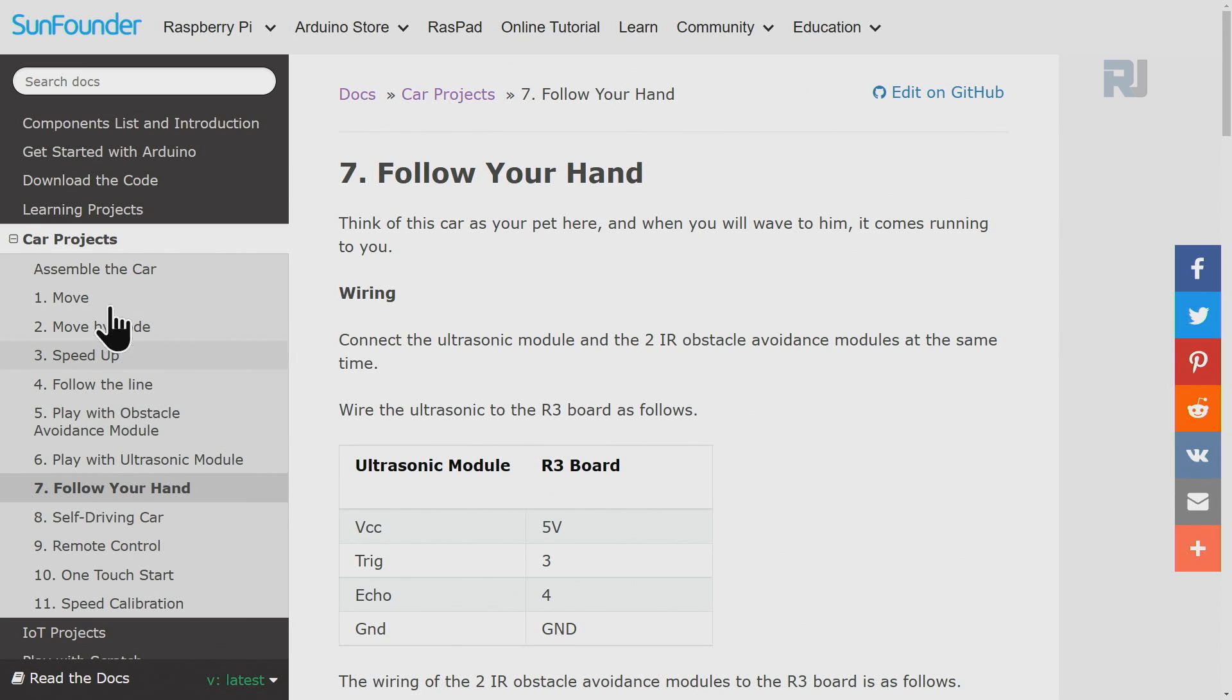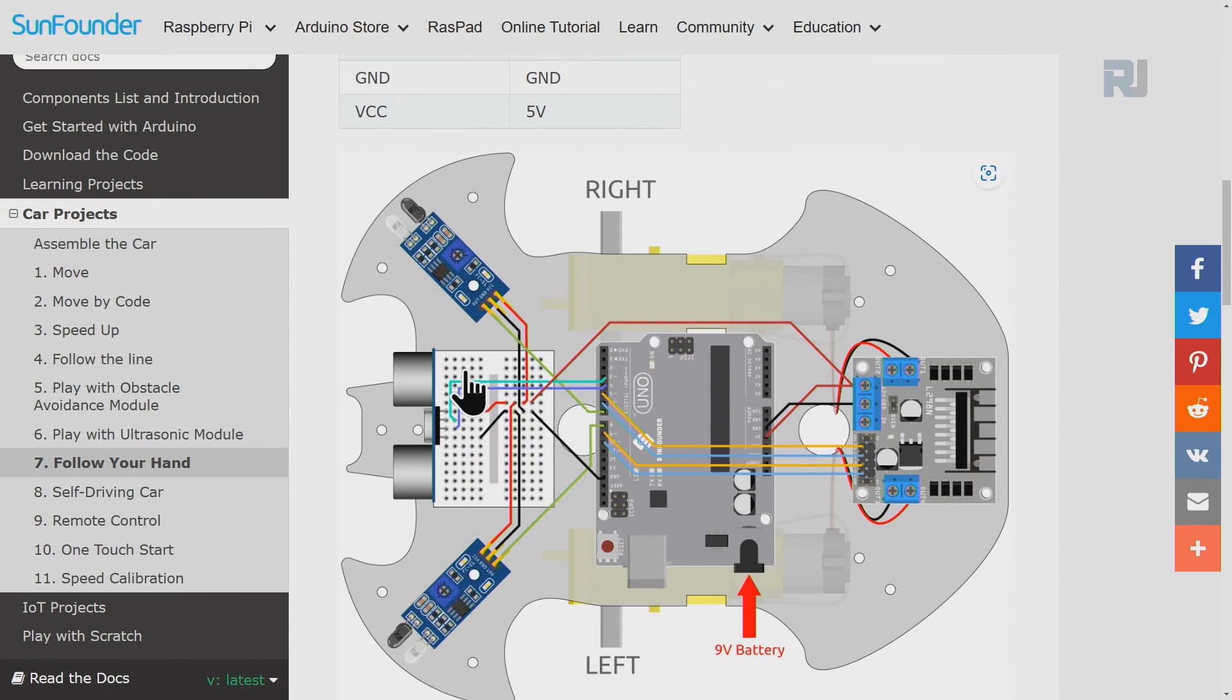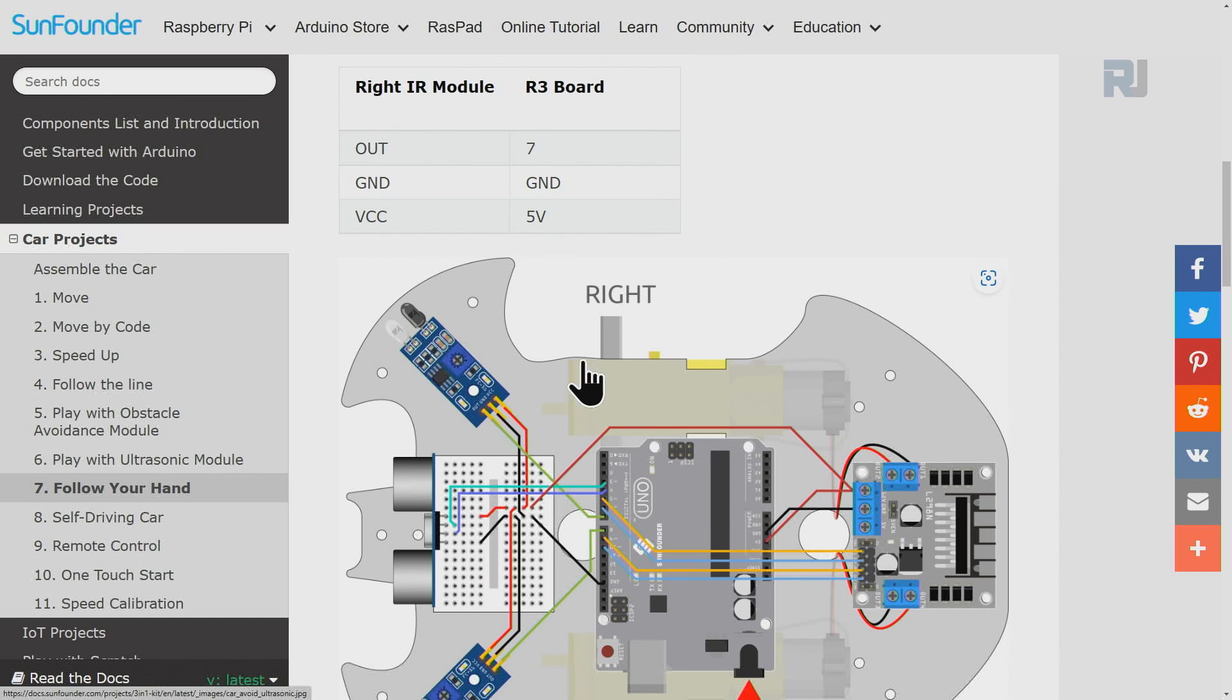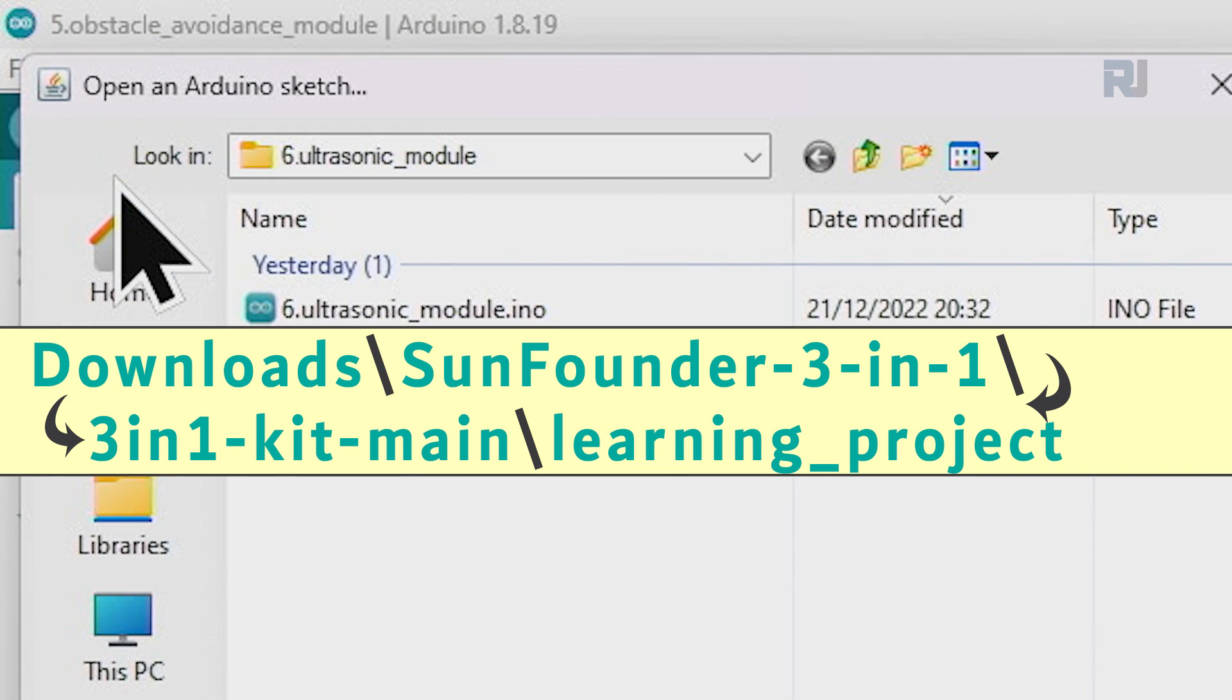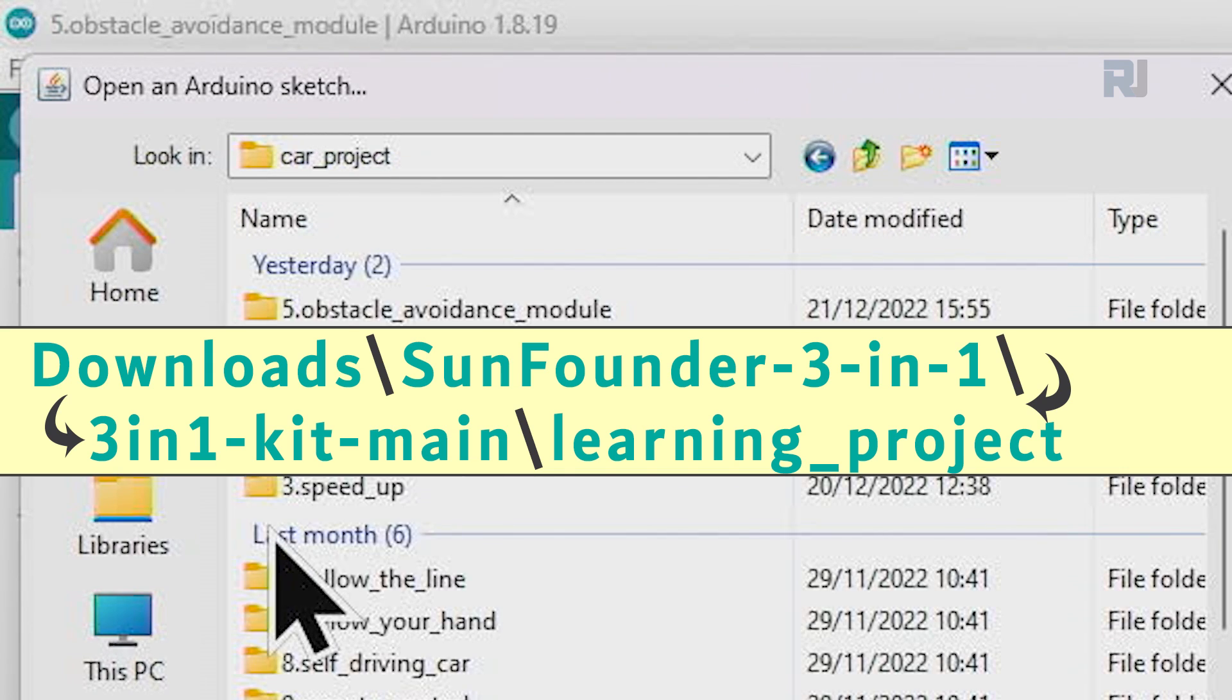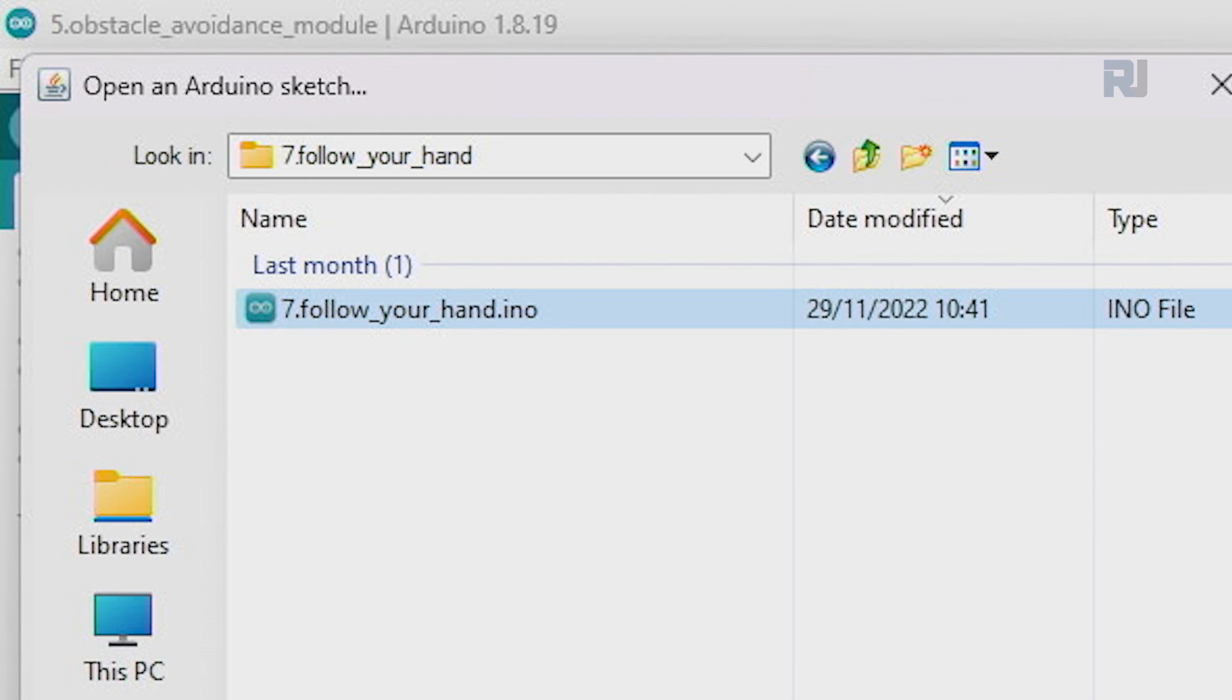This is the project page. If you come to car projects, it's number seven, follow your hand. We already know everything about this, wiring is already done. Let's open the project: click on file, open, go inside that three-in-one kit main, then click on car projects, go to number seven, click on number seven follow your hand, and open.